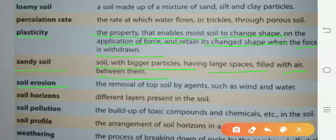Soil erosion: removal of top soil by agents such as wind and water. کسی بھی soil کی اوپر کی جو سطہ ہوتی ہے اس کا agents wind اور water کے دوارہ remove ہو جانا soil erosion یعنی مٹی کا کٹاؤ کہلاتا ہے.